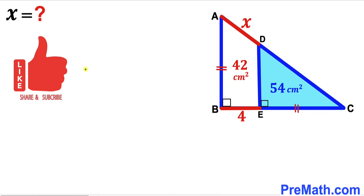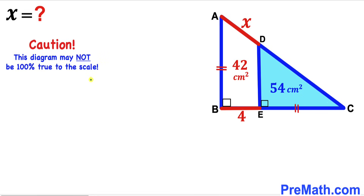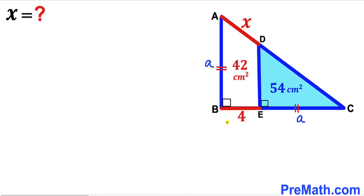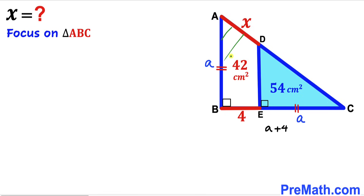Please don't forget to give a thumbs up and subscribe, and keep in mind that this figure may not be 100% true to scale. Let's get started. I'm going to label side AB as lowercase a, then segment EC is also lowercase a, so the whole side BC length is going to be a plus 4.